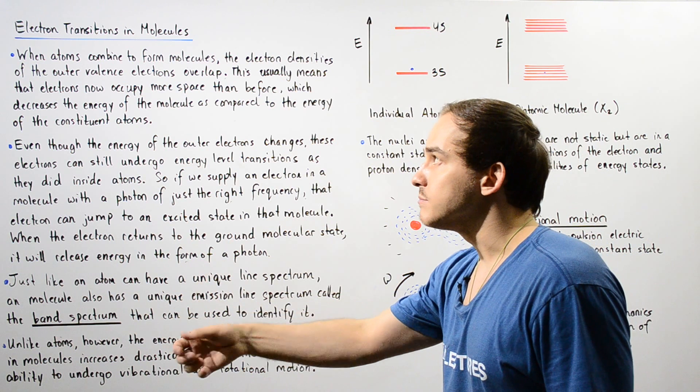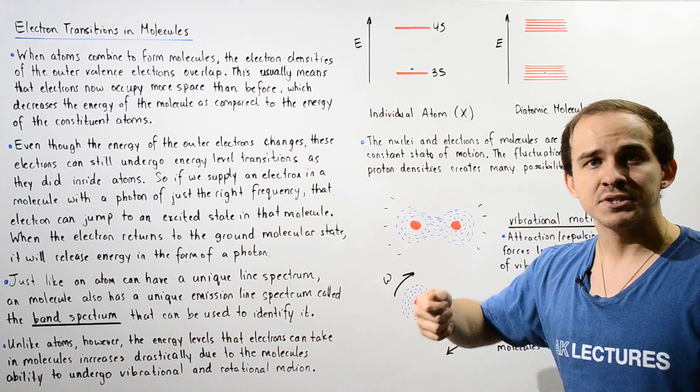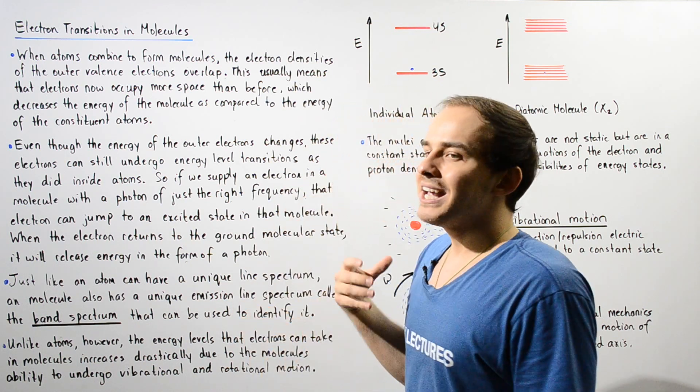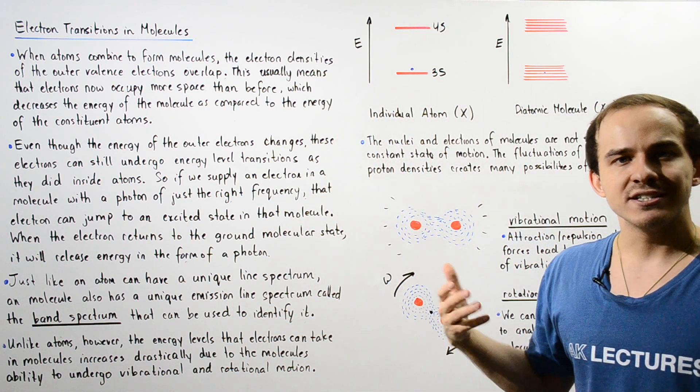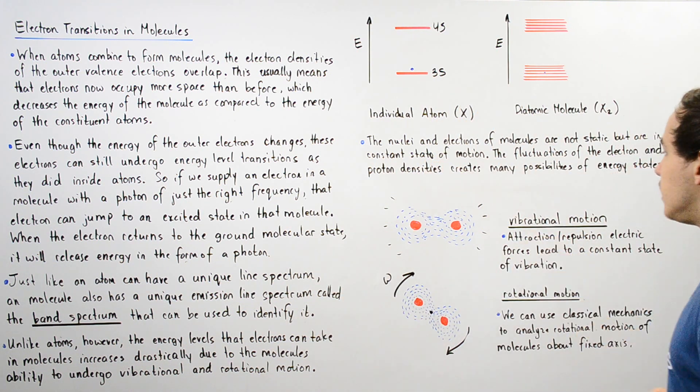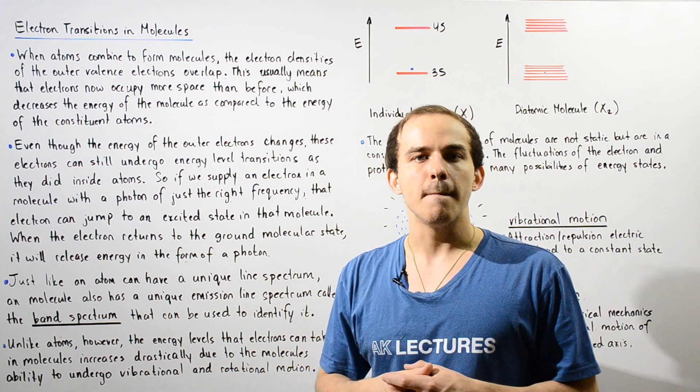So basically, just like electrons in atoms can undergo electronic transitions, electrons in molecules can also undergo electronic transitions. But now we have many more possible energy states as a result of vibrational and rotational motion of our molecule.